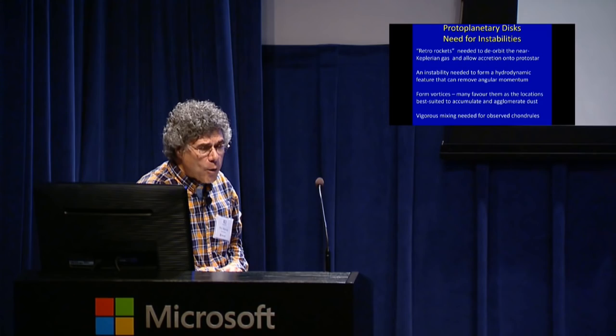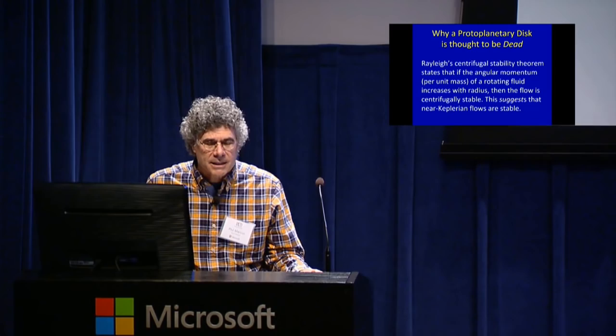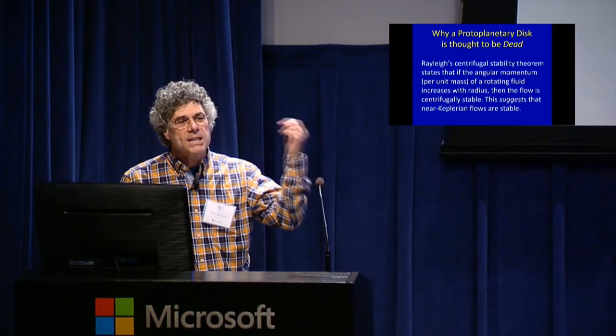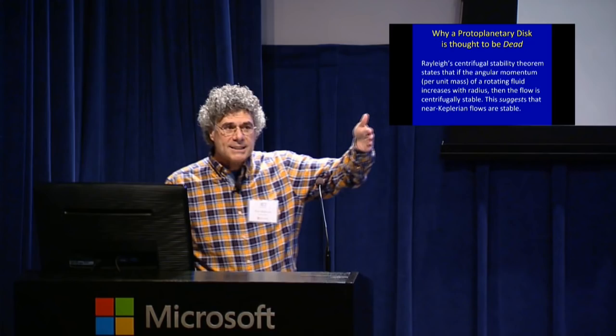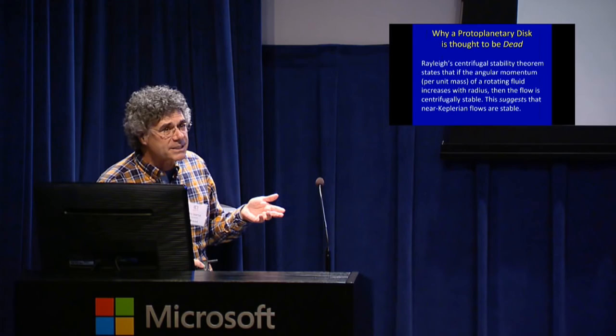The problem considered until the early 1990s — and now considered a problem again — is that a disk is stable to hydrodynamic instability. There's a theorem by Rayleigh from about 100 years ago: if you have a rotating object and the angular momentum per unit mass increases as you go outward, you're going to be stable. Swapping fluid elements while conserving angular momentum costs energy when angular momentum increases outward. It's a very robust theorem, but it only applies to constant-density fluids.